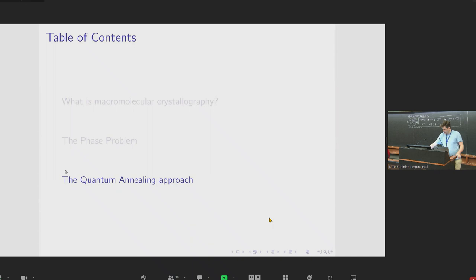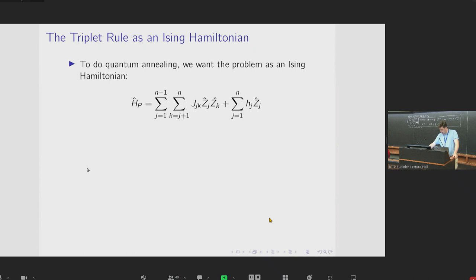So with that, I can come to the approach that we're trying. So we're trying to formulate this triplet rule constraint in such a way as to be suitable for quantum annealing. So to do quantum annealing, we need to formulate our problem as an Ising Hamiltonian, so that we can program it onto the annealer. And in general, that looks like this. It's the equation that's been in most of the talks. So we have these quadratic two-body terms with coupling coefficients J_jk, and the single-body terms with field coefficients h_j.